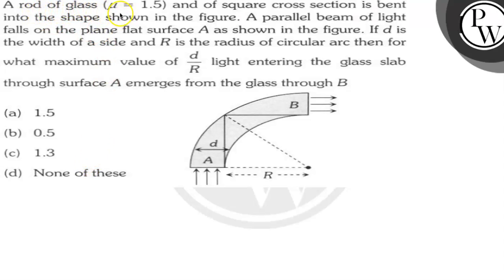A rod of glass of effective index 1.5 and a square cross section is bent into the shape shown in the figure. A parallel beam of light falls on the plain flat surface A as shown in the figure. If D is the width of the side and R is the radius of circular arc, then for what maximum value of D by R light entering the glass slab through surface A emerges from the glass slab through B.